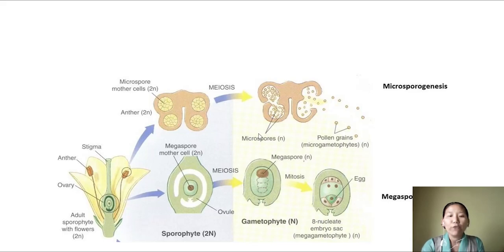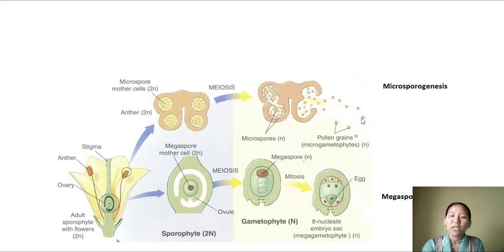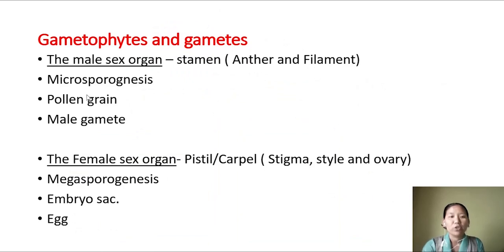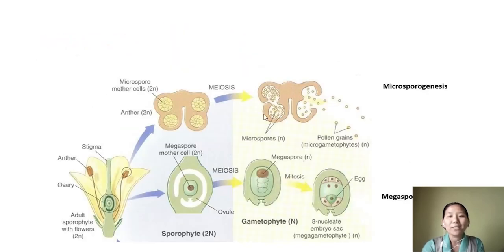All four microspores will further undergo cell division to give rise to the male gametophyte, which we call pollen grain. The pollen grain can be two cells or three cells - even if it is two cells, it finally becomes three cells. It is a very few-celled male gametophyte, and each pollen grain contains two male gametes.